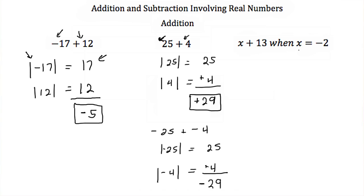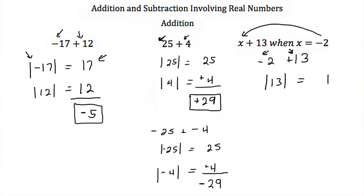Here we have x plus 13 when x equals negative 2. We plug that in, giving us negative 2 plus 13. We have a negative and a positive — different signs — so we subtract their absolute values. The absolute value of 13 is 13 and the absolute value of negative 2 is 2. We subtract and get 11. Our largest absolute value, 13, comes from a positive number, so this 11 is positive.